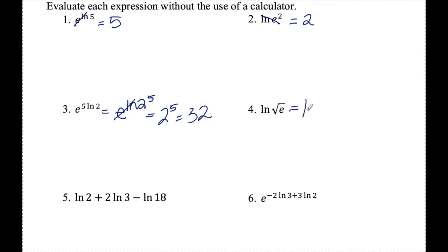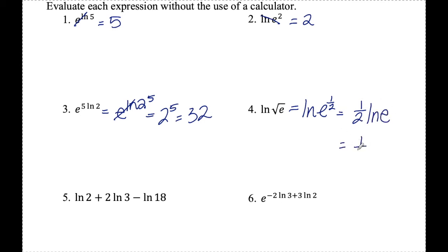Number four: ln of the square root of e. I can write the square root of e as e to the half. Now I can bring that exponent to the front as multiplication: one half times ln e. Ln of e is equal to one, so this expression is just equal to one half.